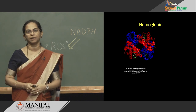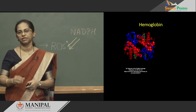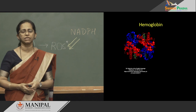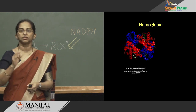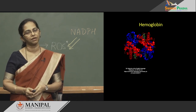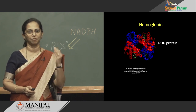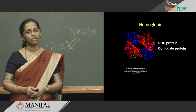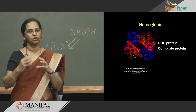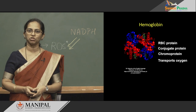Let us focus on catabolism of heme, beginning with the heme carrier. Who is the chief hemoprotein in the body? It is hemoglobin. There are many hemoproteins, but our focus will mainly be on hemoglobin because about 85 percent of the heme that catabolizes every day is from hemoglobin. Hemoglobin is a protein in the RBC that imparts colour — that is why we call it the red blood cell. It is a conjugated protein, meaning it is a protein conjugated to a non-protein group, which is heme. It is a chromoprotein — heme is a coloured compound — and it transports oxygen.